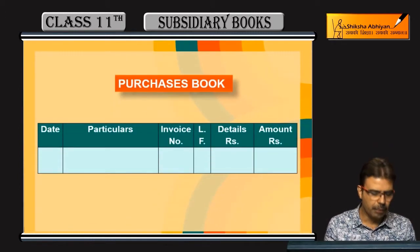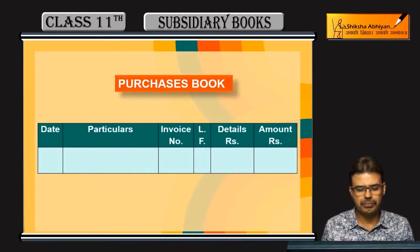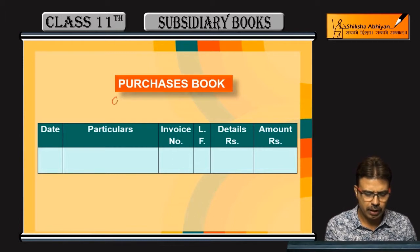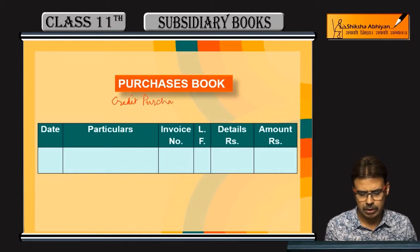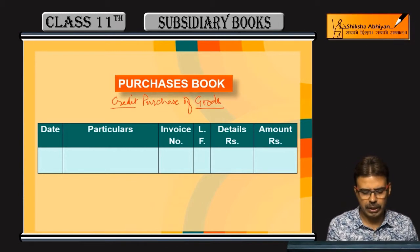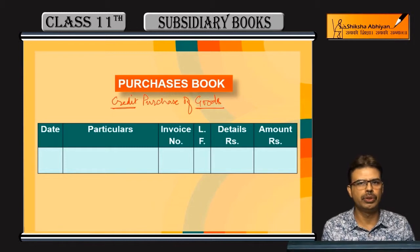Now I will put the individual subsidiary books in front of you, starting with the purchase book. In this book, all transactions show credit purchases of goods. Goods means the items we are doing business in. Cash purchases of goods go to the cash book, so they will have no place here in the purchase book.